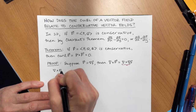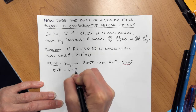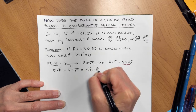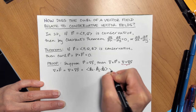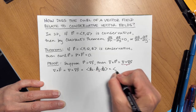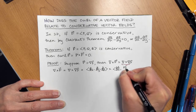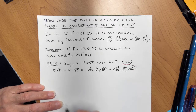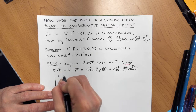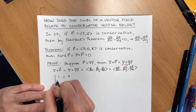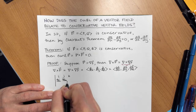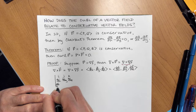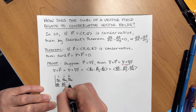So, ∇ × f, which equals ∇ × (∇f) when f is conservative, means we're crossing (∂/∂x, ∂/∂y, ∂/∂z) with the gradient of f, which is (∂f/∂x, ∂f/∂y, ∂f/∂z). I'll write this out as the determinant with i, j, k in the first row; ∂/∂x, ∂/∂y, ∂/∂z in the second row; and ∂f/∂x, ∂f/∂y, ∂f/∂z in the third row.